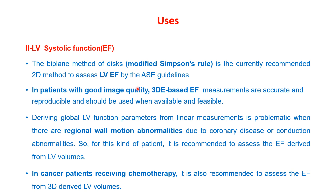In patients with good quality images, 3D echo-based ejection fraction is also accurate and reproducible and should be used when available and feasible. Deriving global LV function from linear measurements is problematic when there are regional wall motion abnormalities due to coronary artery disease or conduction abnormalities. For such patients, and for cancer patients receiving chemotherapy, it is recommended to assess ejection fraction from 3D-derived left ventricular volumes.